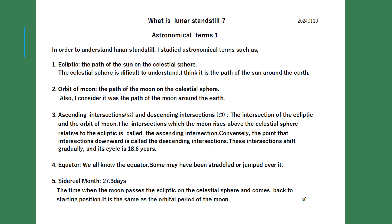These intersections shift gradually, and their cycle is 18.6 years. 4. Equator: we all know the equator — some may have straddled or jumped over it. 5. Sidereal month: 27.3 days — the time when the moon passes the ecliptic on the celestial sphere and returns to its starting position. It is the same as the orbital period of the moon.